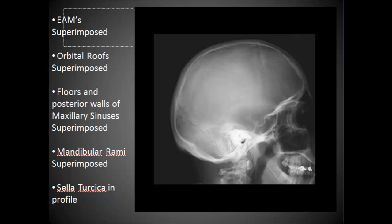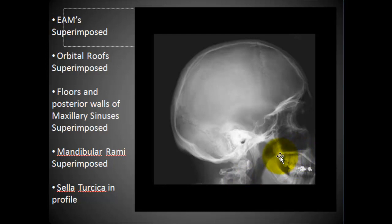For image critique criteria, we want the EAM superimposed. We also want the orbital roofs superimposed, which shows you that you're in a true lateral position. The floors and posterior walls of the maxillary sinuses should be superimposed. The mandibular rami superimposed. You can also look at the TMJs, and the sella turcica should be in profile — a crisp, clean view of the sella.